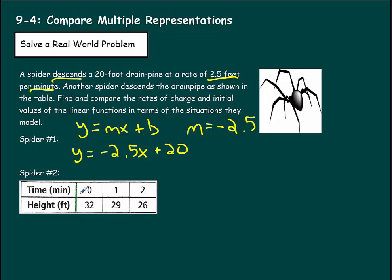For spider 2, we write y equals mx plus b. We can find b right away from the table — the y-intercept is 32, so it's plus 32. Now we find the slope using rise over run. Using two points, the height goes from 32 to 29, that's down 3 over a run of 1, giving a slope of negative 3. So the equation is y equals negative 3x plus 32.